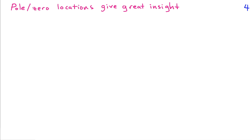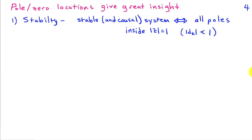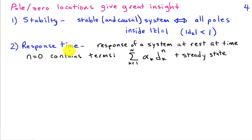The pole and zero locations give us a lot of insight about the behavior of the system. It turns out that for a system to be stable and causal — where a bounded input always produces a bounded output — all the poles must lie inside the unit circle, meaning the magnitude of all poles must be less than 1. The poles and zeros also tell us a lot about the response time of the system.